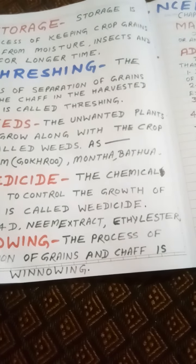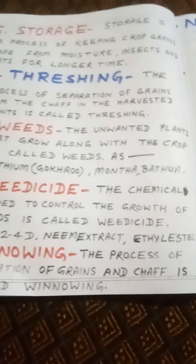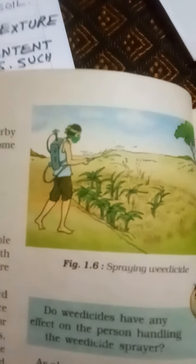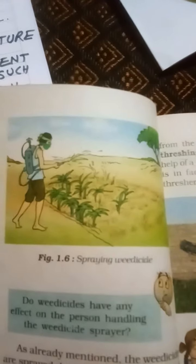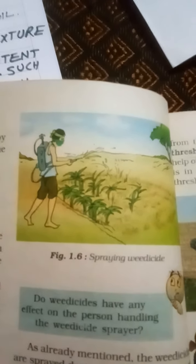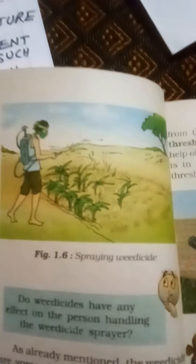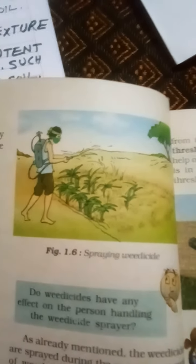Weedicides are sprayed on crops using a sprayer machine. Farmers use a sprayer to apply weedicides because weedicides are poisonous chemicals and must be handled carefully.